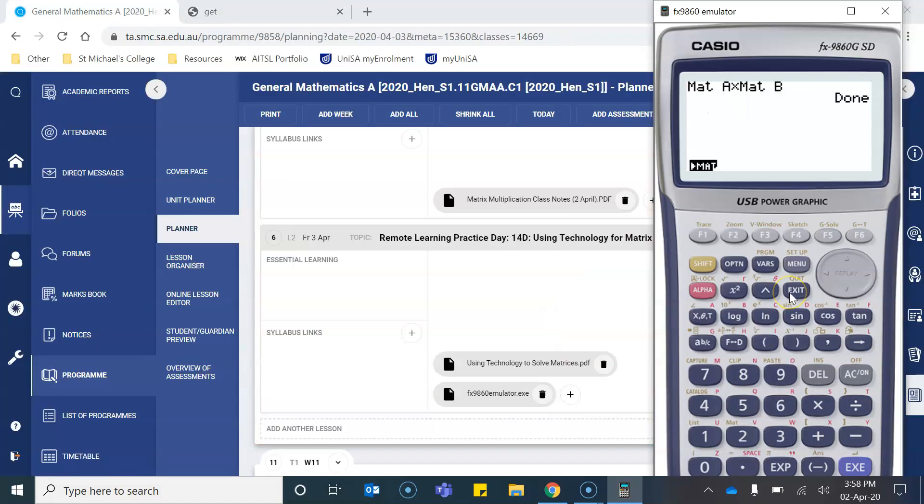Now, another thing that we can do. If we have a look at our matrix A. Again, I click F1, I look at matrix A. You can see this value is negative 1, 2, 5, 8, 6, negative 4. Now remember, we can multiply, we can have multiples of matrices. If I was to multiply the matrix A by the scalar number 2, all of these values will be doubled.